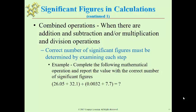Here's one example where it says complete the following and report the value with the correct number of significant figures. Well, you have an addition in the first example, and if you add 26.05 and 32.1, you're going to get 58.15. But if you were to stop there, you would have to stop at the point rounding to the tenths place, but you don't want to round too early. You just want to keep in mind that the answer to that particular addition is only going to have one decimal place because of the rule for addition.